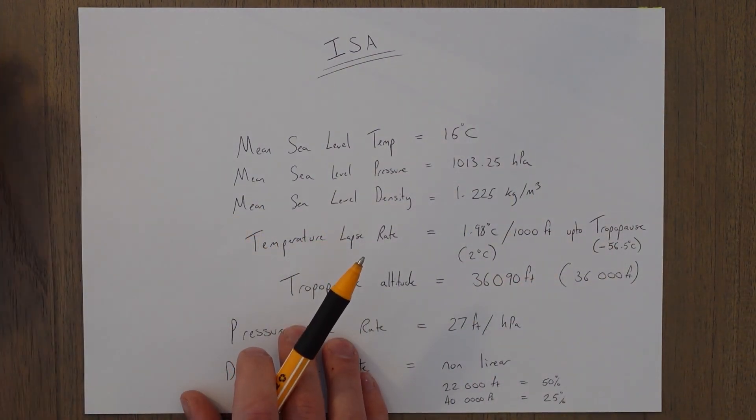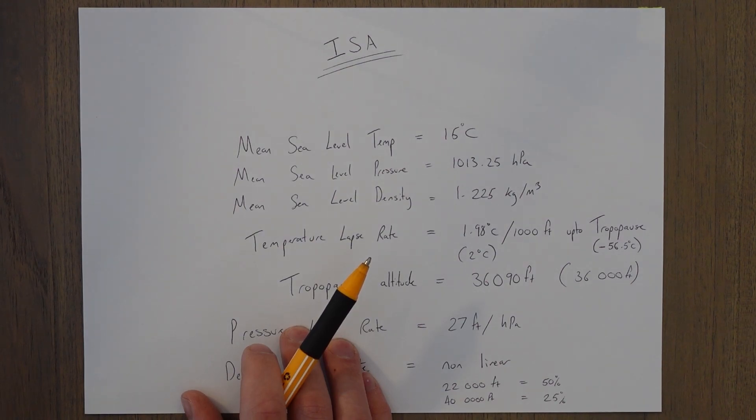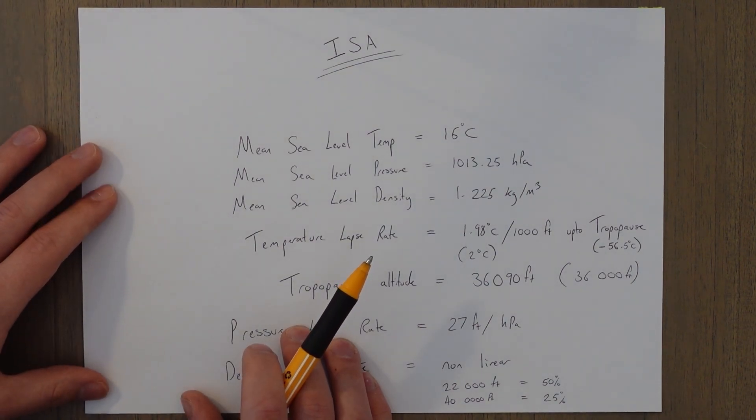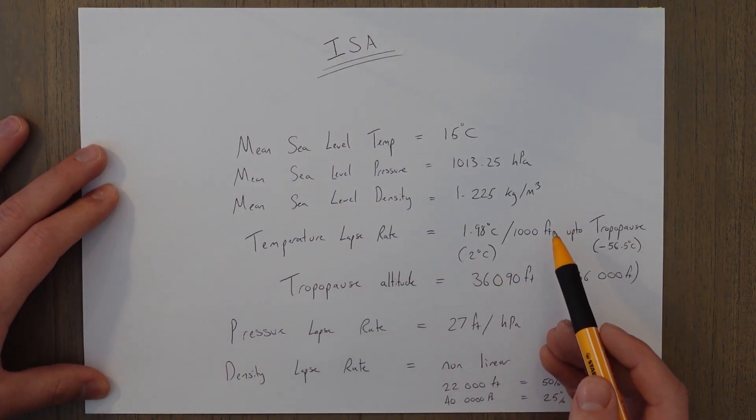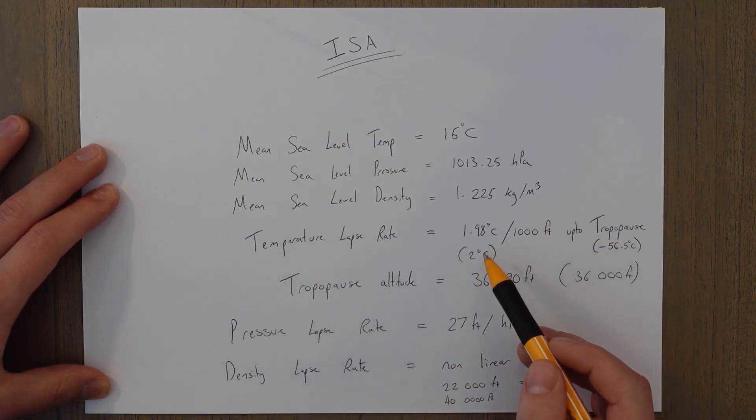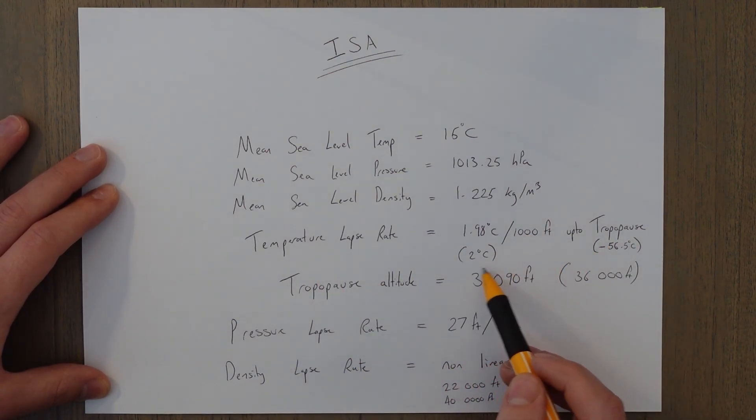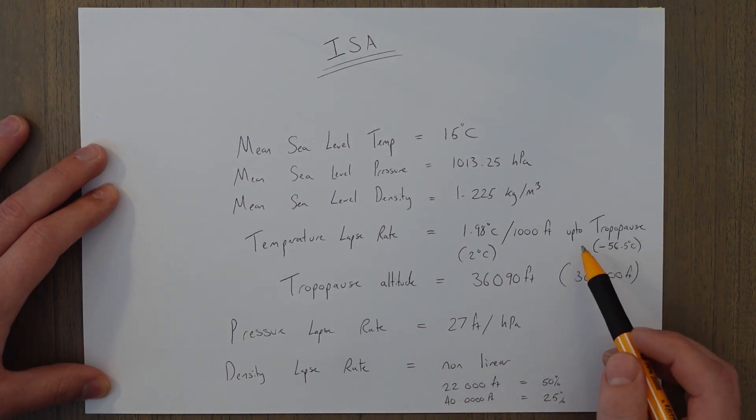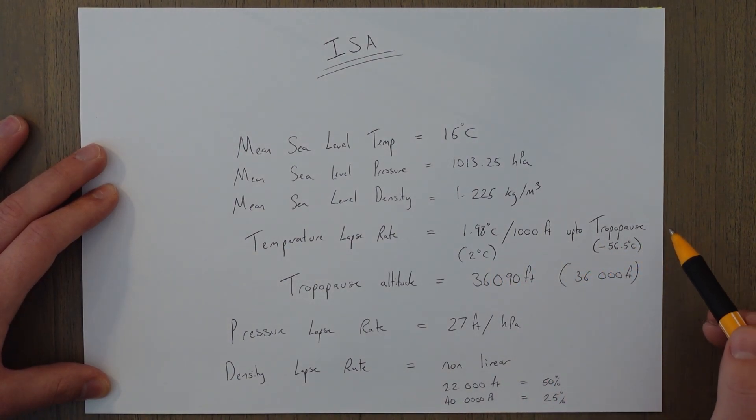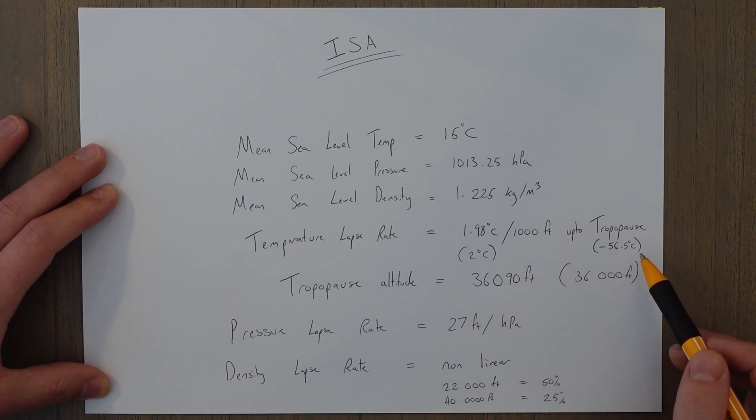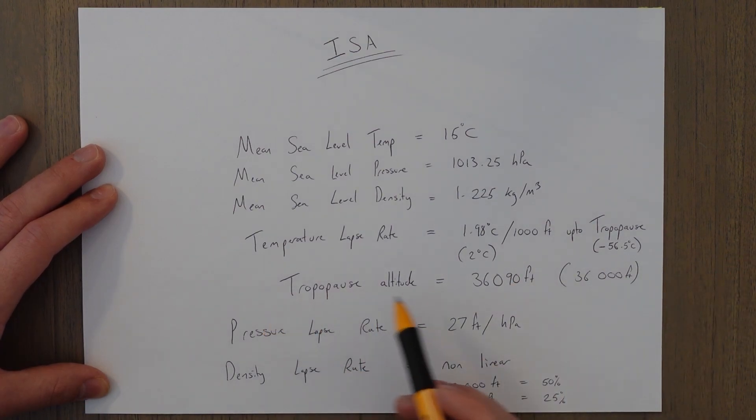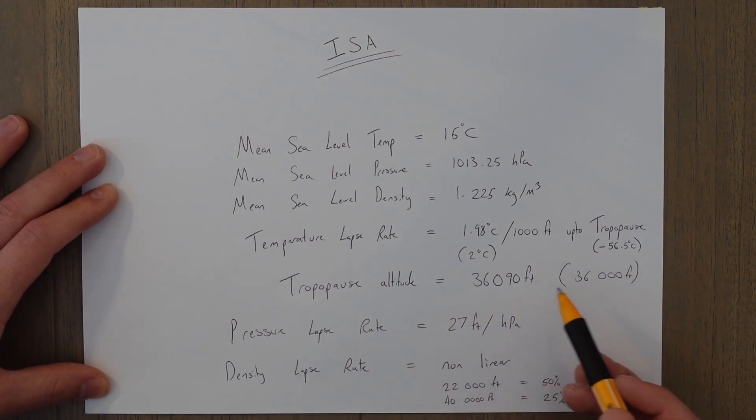There's a mean sea level temperature of 15 degrees Celsius, a mean sea level pressure of 1013.25 hectopascals, a mean sea level density of 1.225 kilograms per meter cubed, temperature lapse rate is 1.98 degrees per thousand feet, or 2 degrees per thousand feet practically speaking up to the tropopause. At the tropopause the temperature remains constant at minus 56.5 degrees Celsius. The tropopause is located at 36,090 feet, or for practical purposes you can just say 36,000 feet.